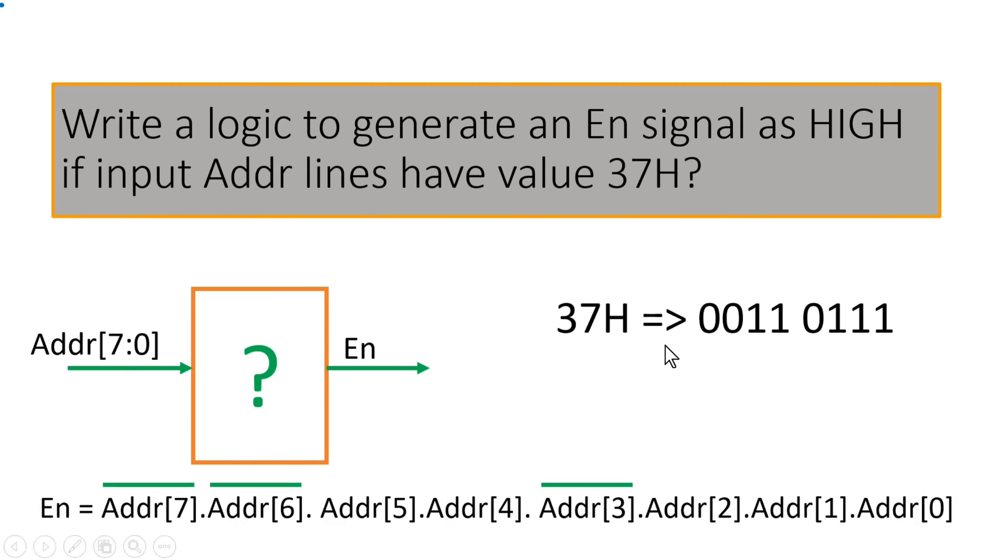Wherever there is zero, we have to put bar on that. So Addr[7] bar, Addr[6] bar, Addr[5], Addr[4], Addr[3] bar, Addr[2], Addr[1], and Addr[0].